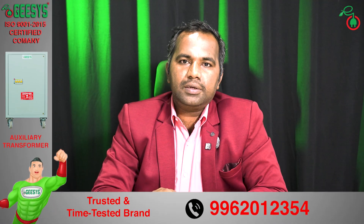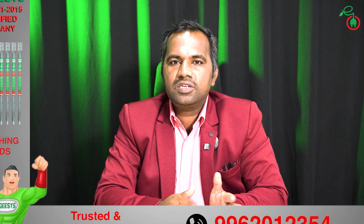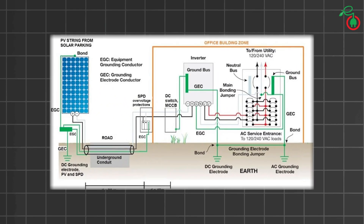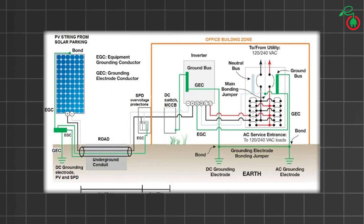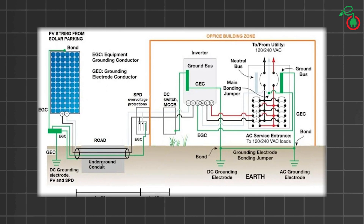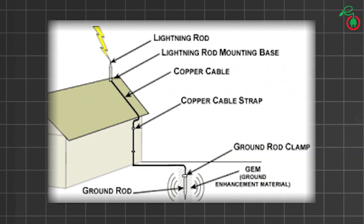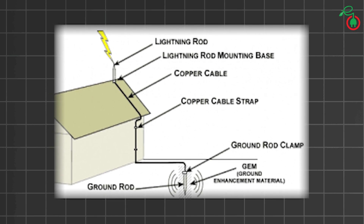The second is SPD earthing. AC DB and DC DB will have a DC SPD and AC SPD, and both have to be earthed separately. In case of AC side surges or DC side surges, the surge will go directly to the earth pit. The third is lightning protection earthing — in case of a lightning strike, the lightning arrester will capture the lightning and pass it to the earth pit.